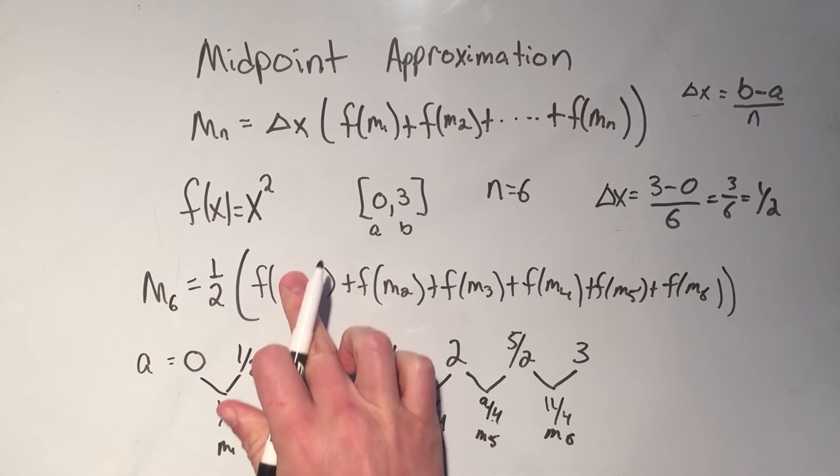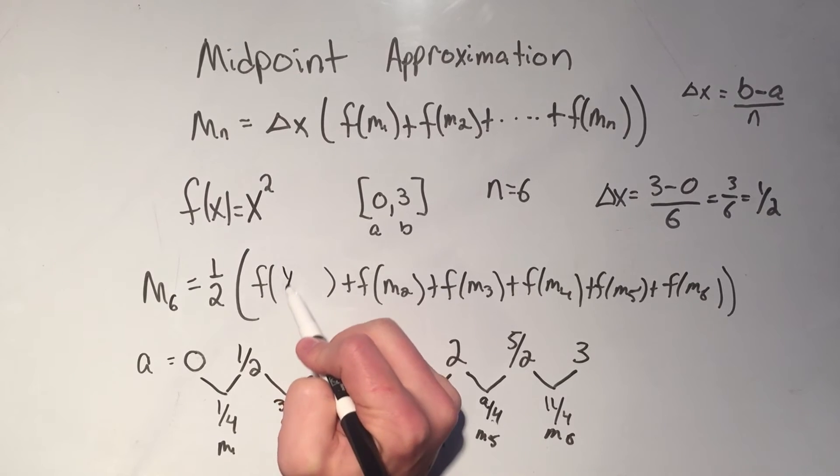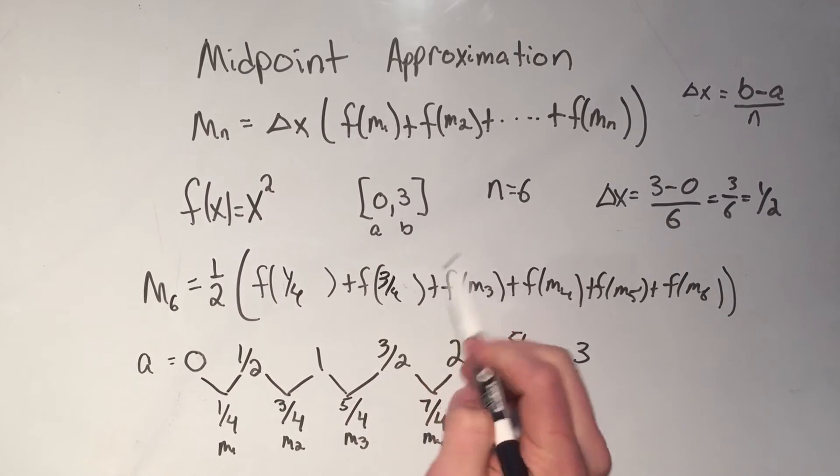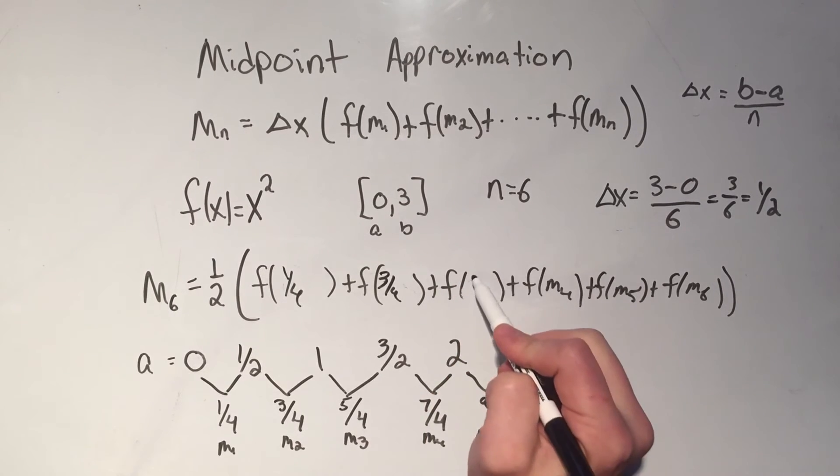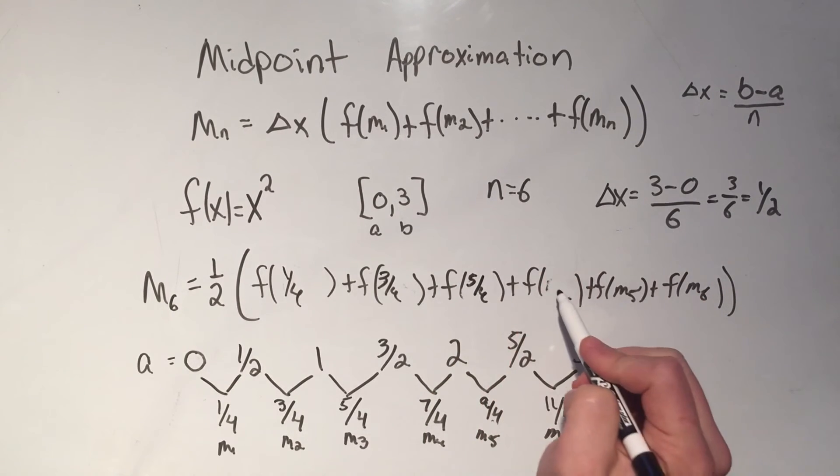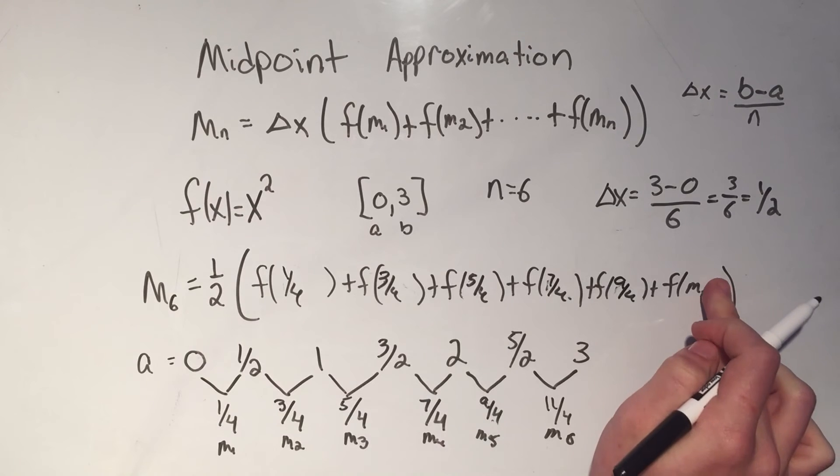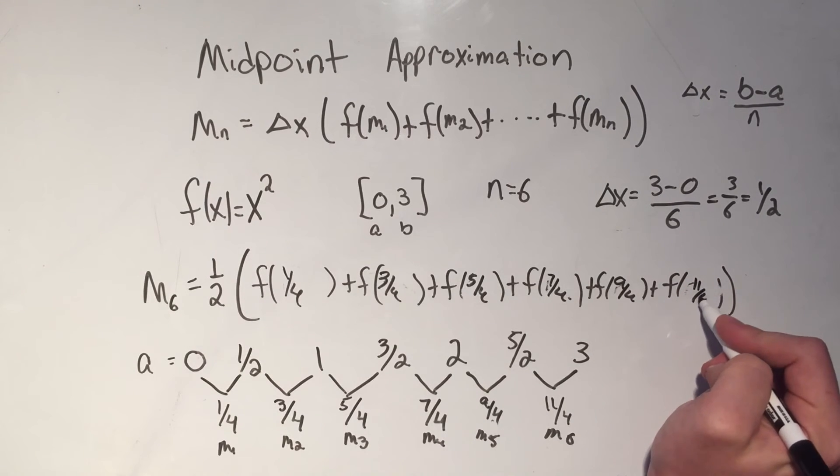So now I'm going to have f of 1 fourths plus f of 3 fourths plus f of 5 fourths plus f of 7 fourths plus f of 9 fourths plus f of 11 fourths.